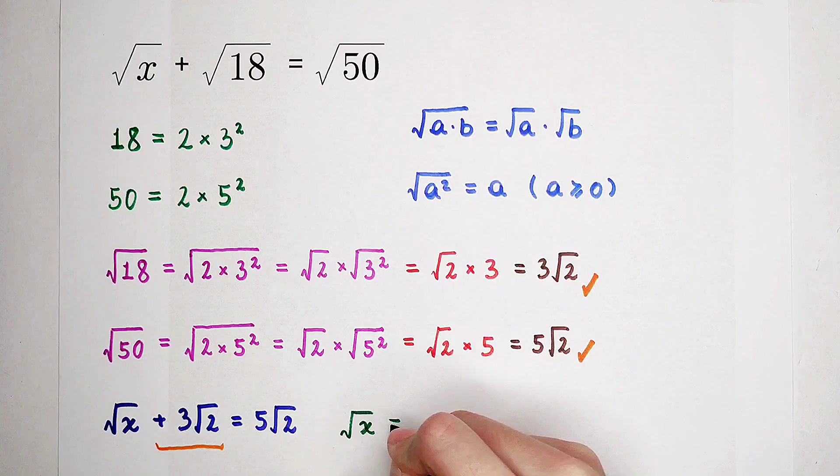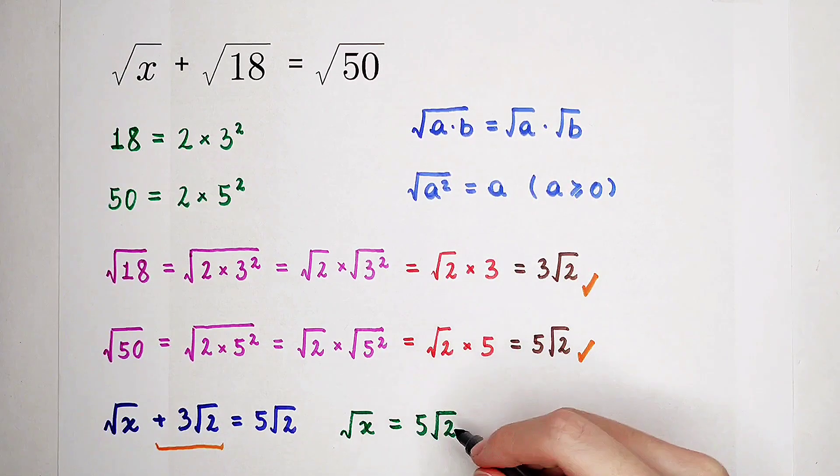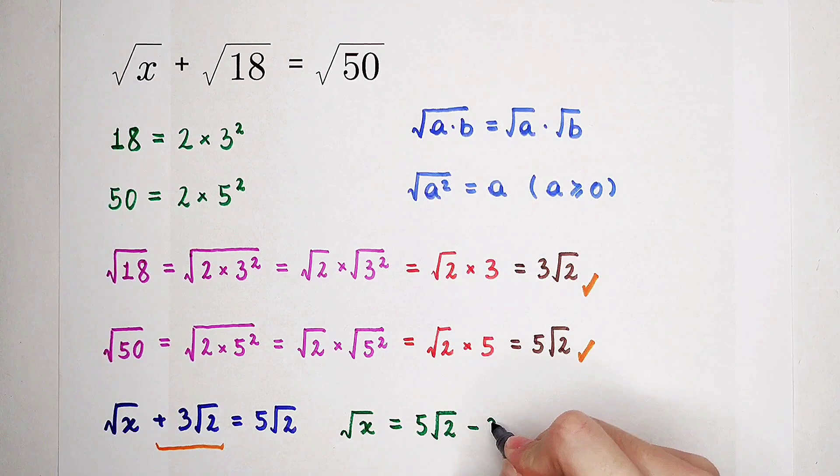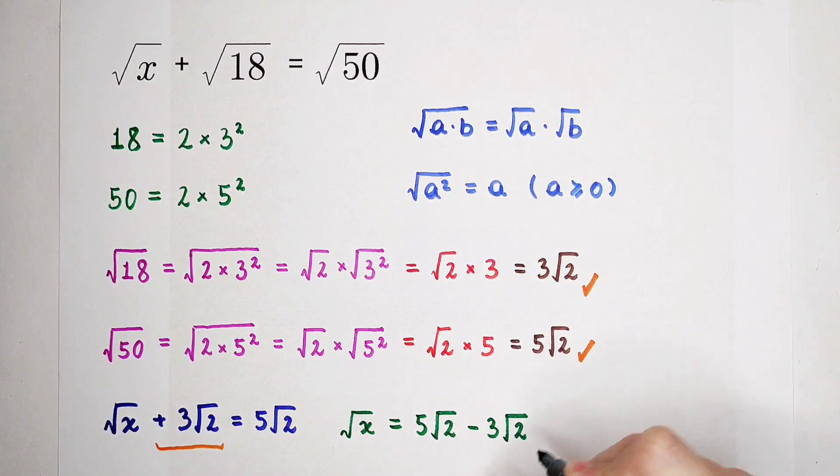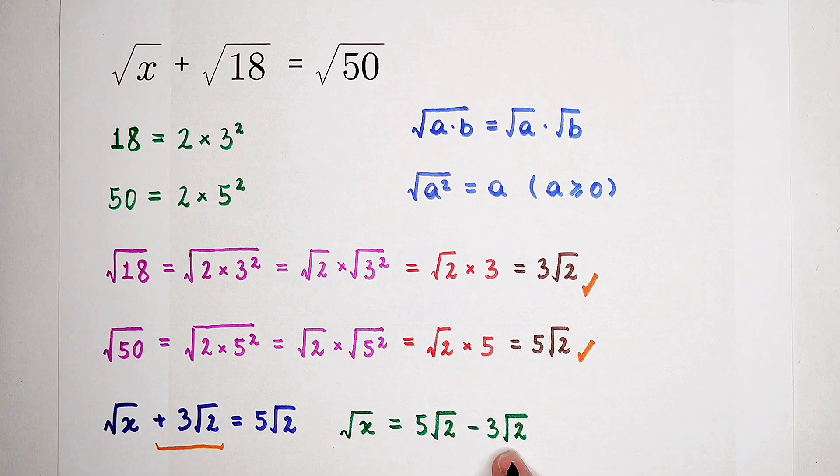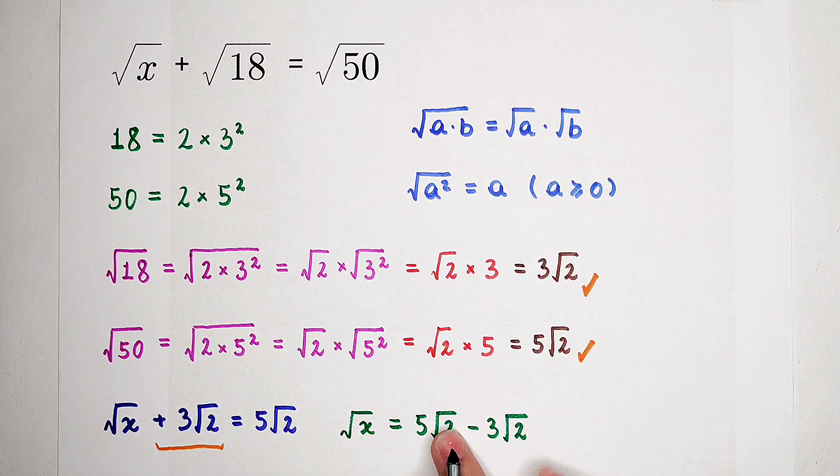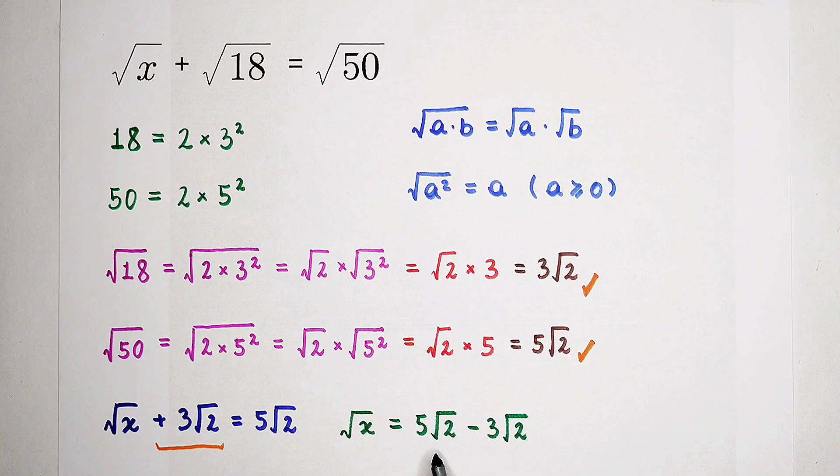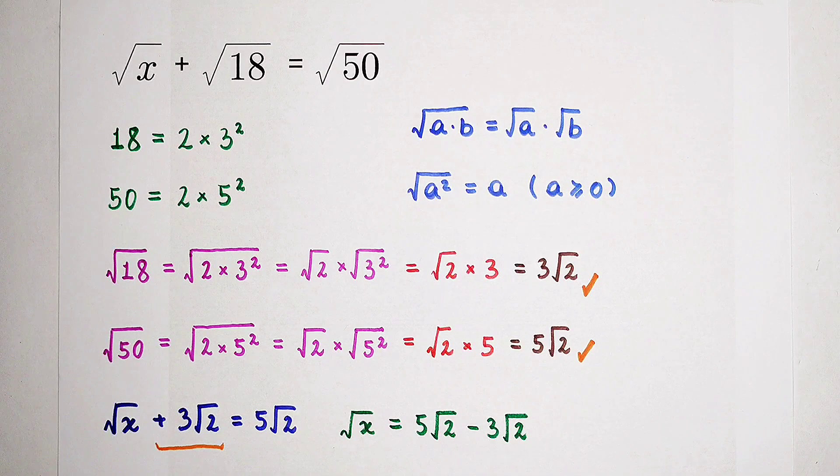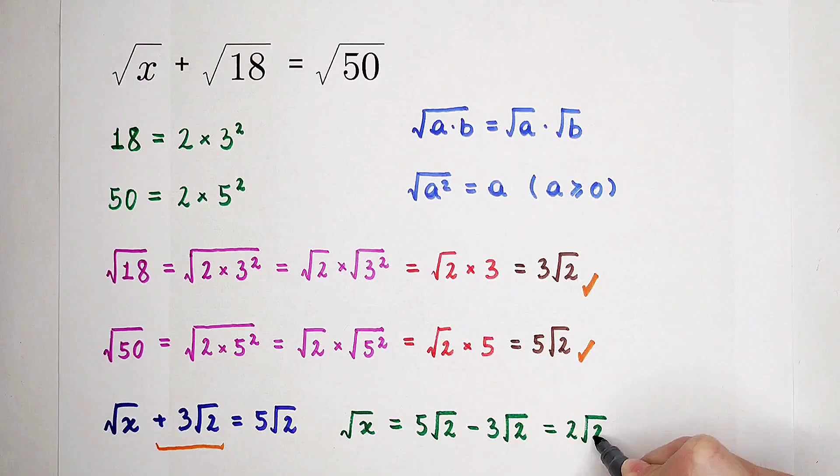So the square root of x is equal to 5 times square root of 2, then minus 3 times square root of 2. 5 times square root of 2, then minus 3 times square root of 2. You can take out a square root of 2. That's square root of 2, then times 5 minus 3 is 2. So it is 2 times square root of 2.